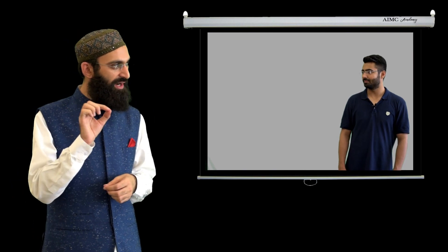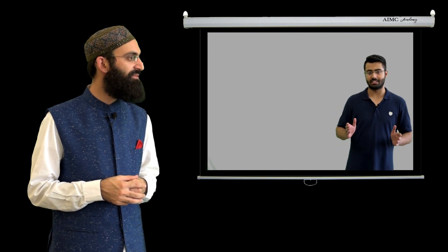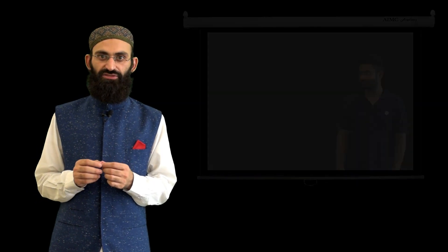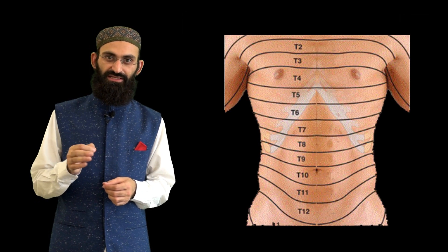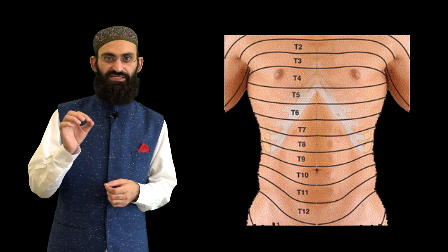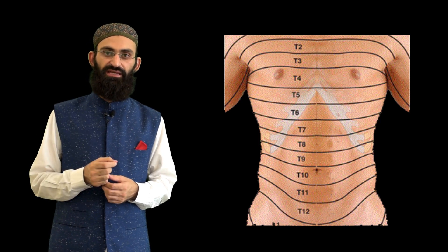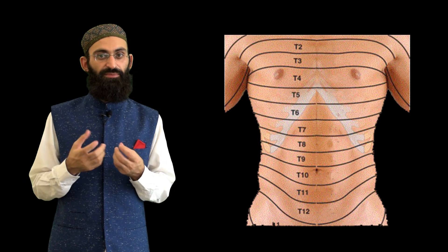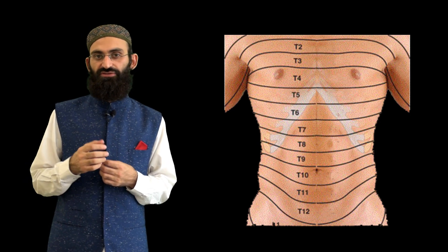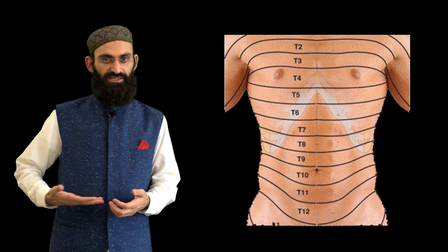To further pinpoint the site of the lesion, we check for the topmost level of dermatomal sensory loss. Important dermatomal landmarks: symphysis pubis is T12, umbilicus is T10, xiphisternum is T6, and the nipples mark T4. So if there is spastic paraplegia with a sharp sensory level at the umbilicus, the lesion localizes to the T10 spinal segment.